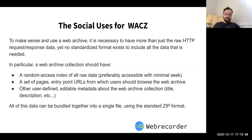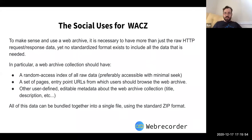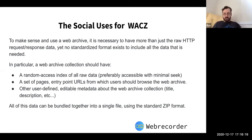If you just look at a WARC file, it has all the URLs that are part of a web archive, including all the JavaScript, images, CSS — anything that might come from a web page. Most of those are not starting points for someone to browse from. The page list provides a way to point the user to pages that are important and actually browsable.